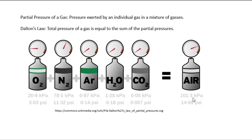Air is a gas, and air is also a mixture of individual gases — oxygen, nitrogen, argon, water vapor, carbon dioxide. The pressure that air exerts is really a combination of the individual pressures of each gas, and that's Dalton's law. Dalton's law says the total pressure of a gas is equal to the sum of the partial pressures of each of the individual gases.